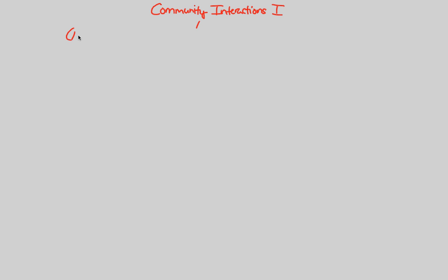This idea of competition is very simple. I'm going to put a definition right next to it so that it evens out and centralizes the idea. The reason why I put a number 1 here is because there are three main Community Interactions, thus three major flowcharts on Community Interactions that we'll be doing. The first one will be on competition.